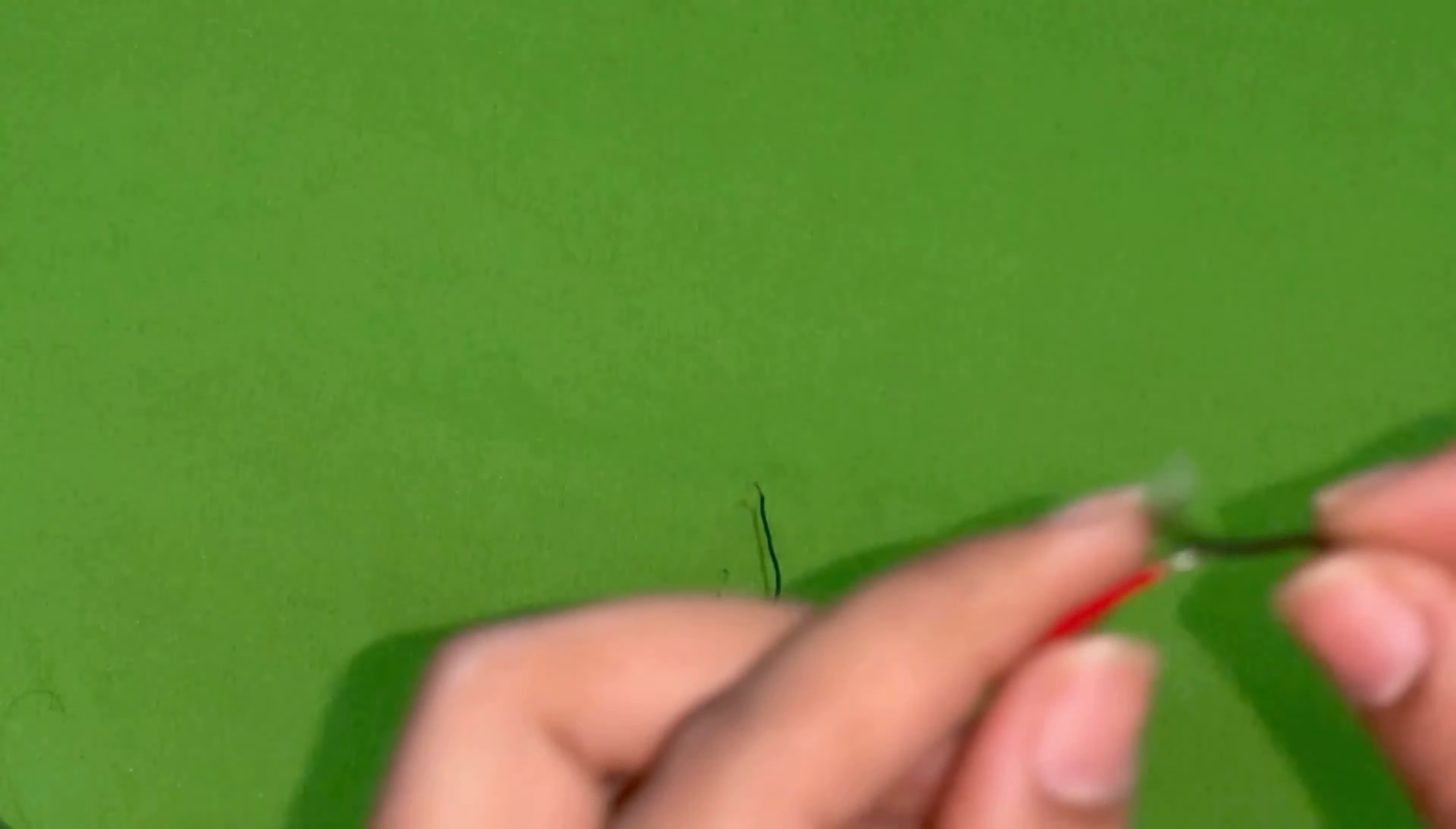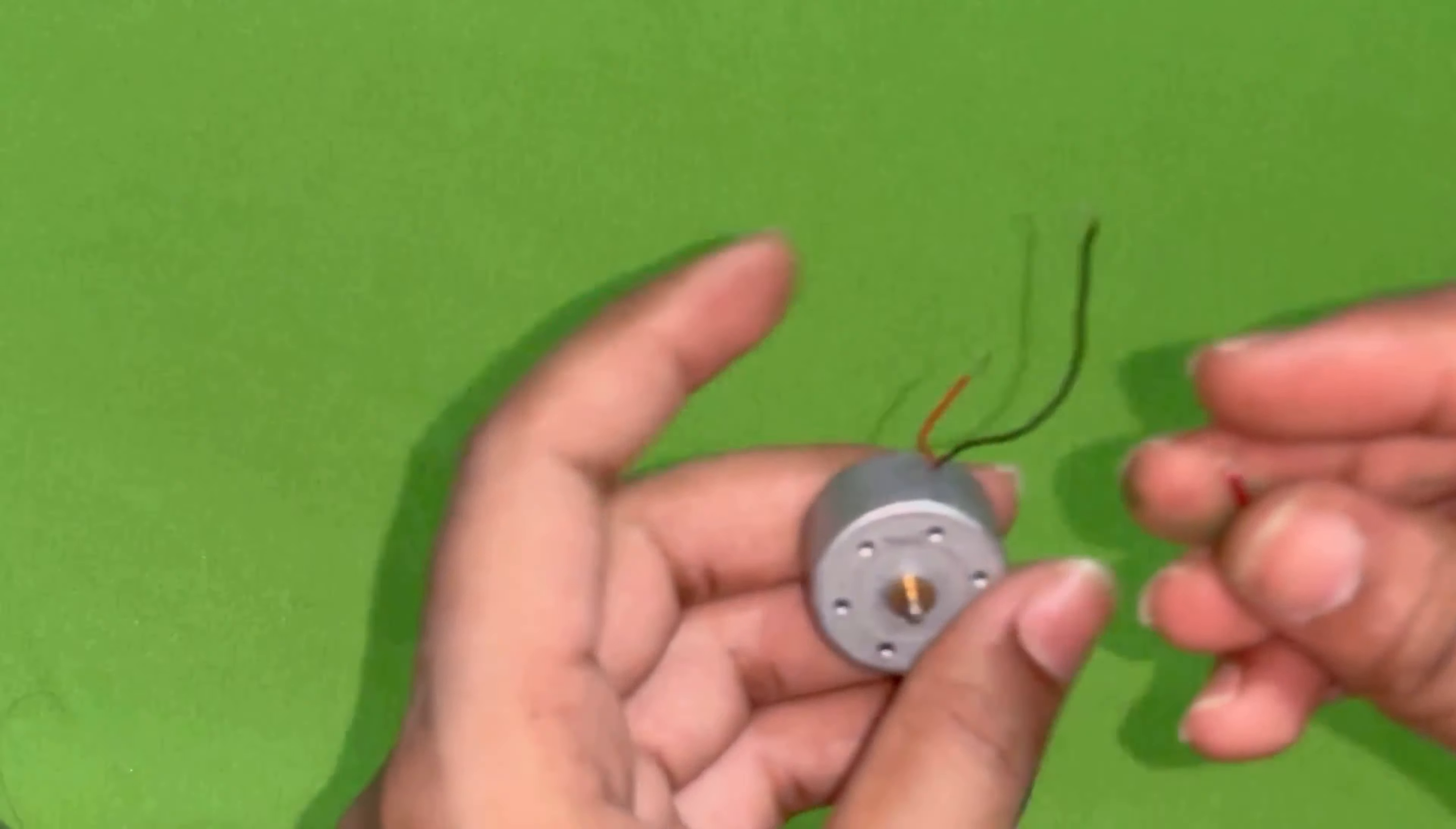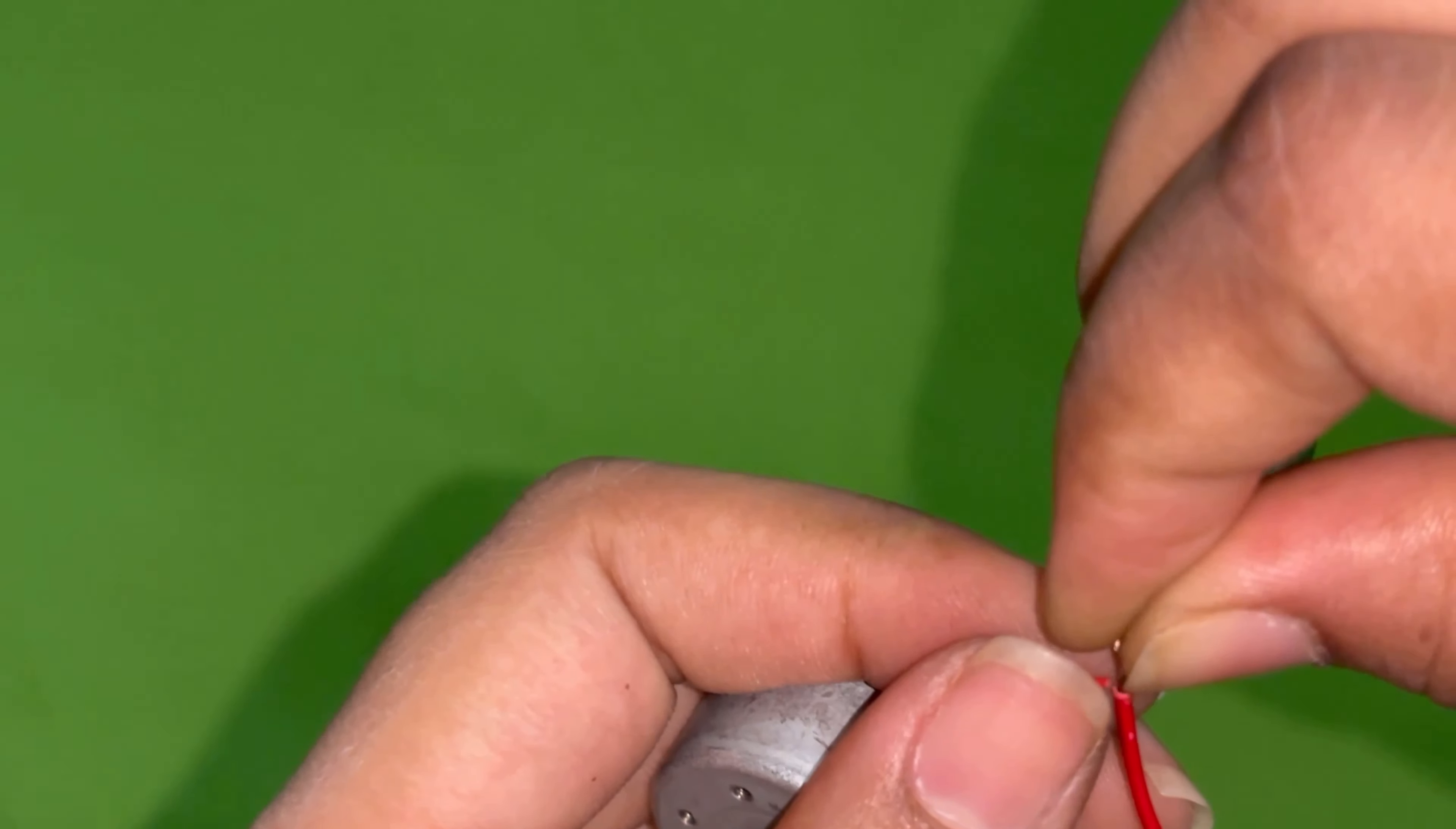What will we do? First of all, you will cut wires. I have cut wires here because it was short. It's mostly short length. So, we will need to increase the wires.